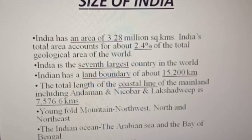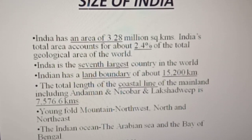India has a land boundary of about 15,200 km. The total length of the coastline, including Andaman and Nicobar and Lakshadweep Islands, is 7,516.6 km.